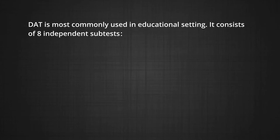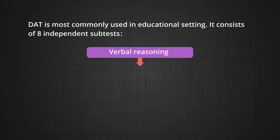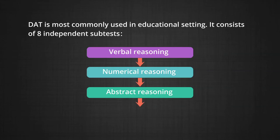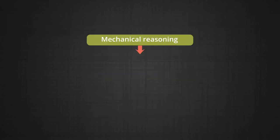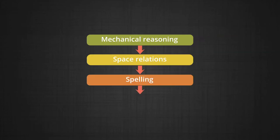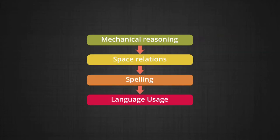DAT consists of eight independent subtests: verbal reasoning, numerical reasoning, abstract reasoning, clerical speed and accuracy, mechanical reasoning, space relations, spellings, and language use. An Indian adaptation of DAT has been developed by J.M. Oja. Several other aptitude tests have been developed in India for measuring scientific, scholastic, literary, clerical and teaching aptitude.